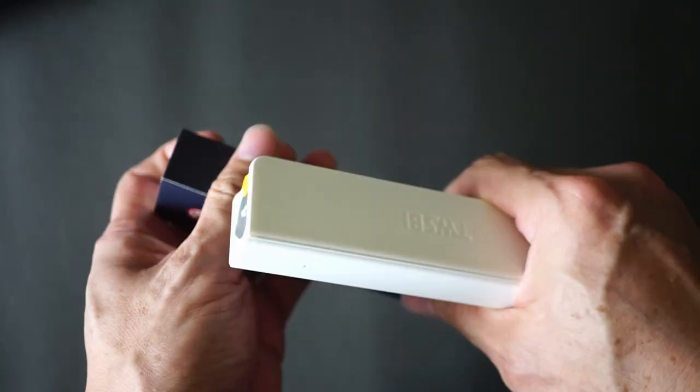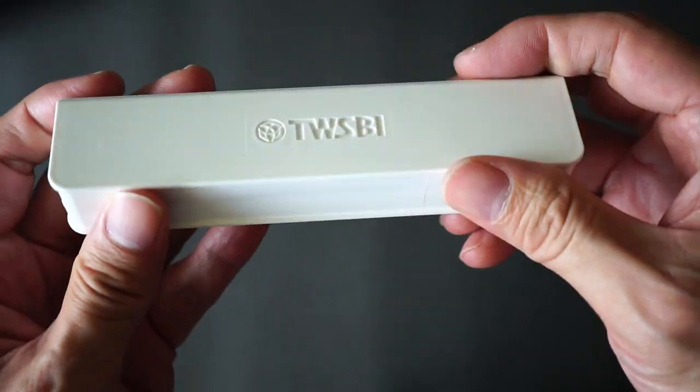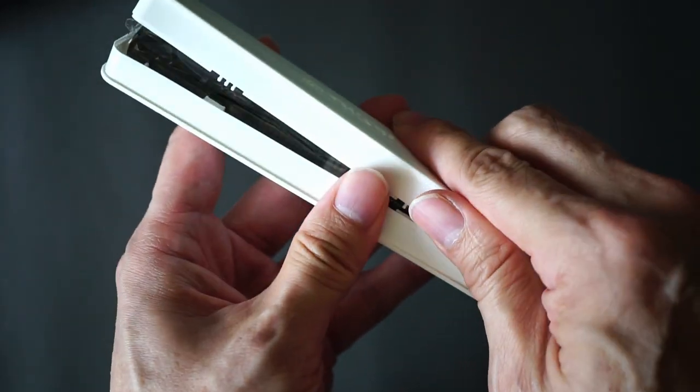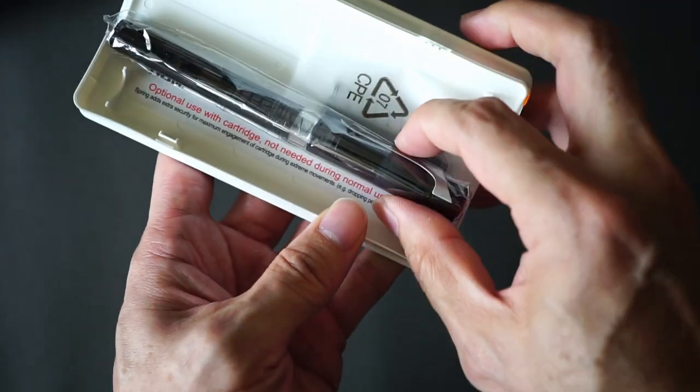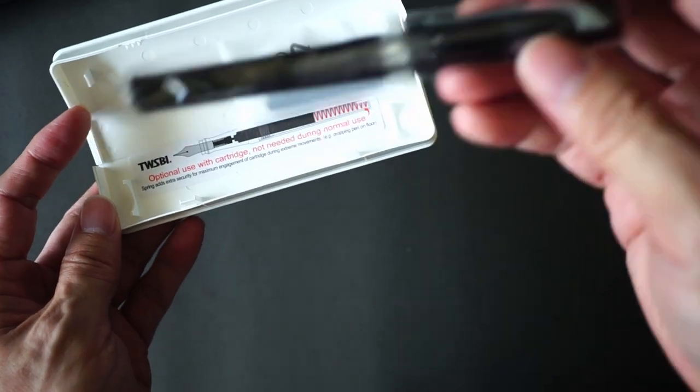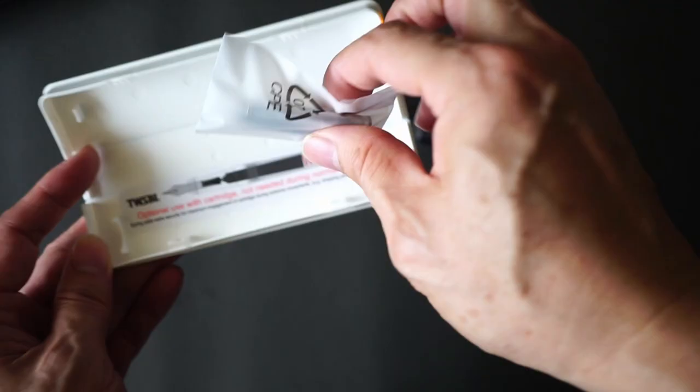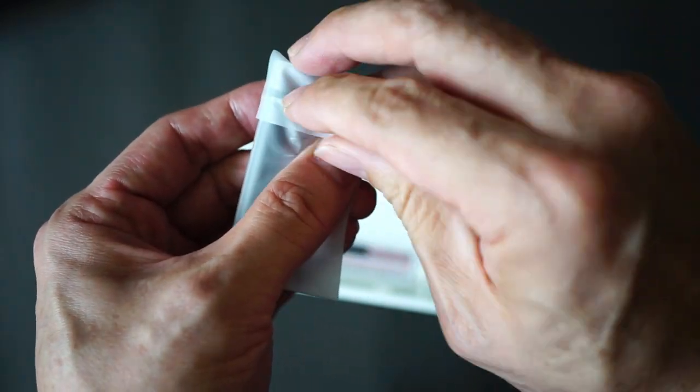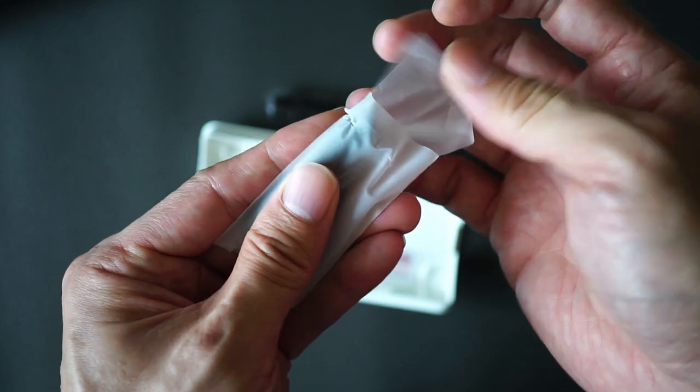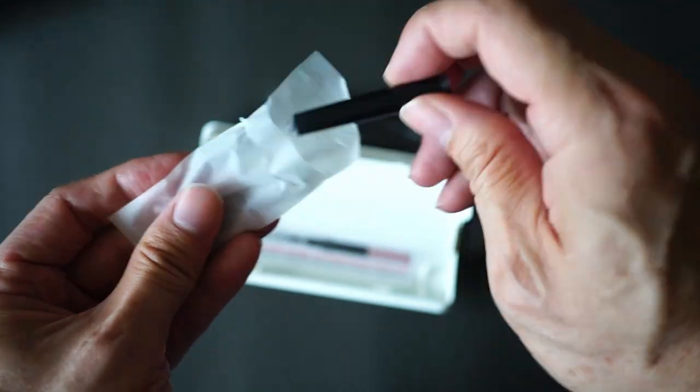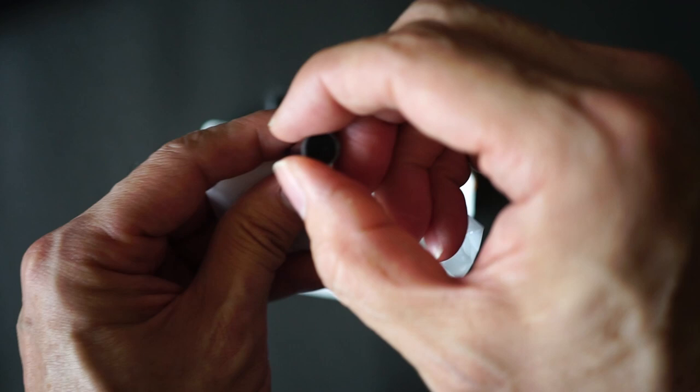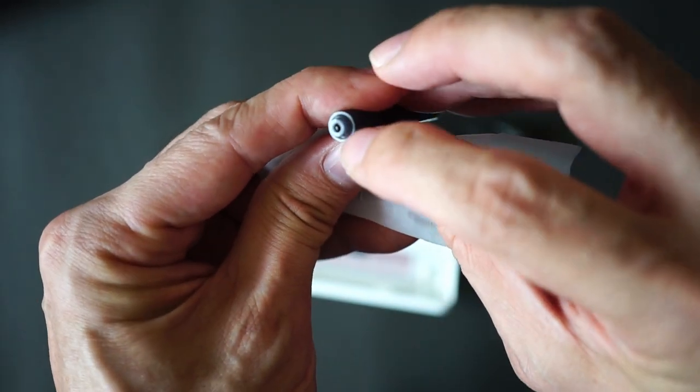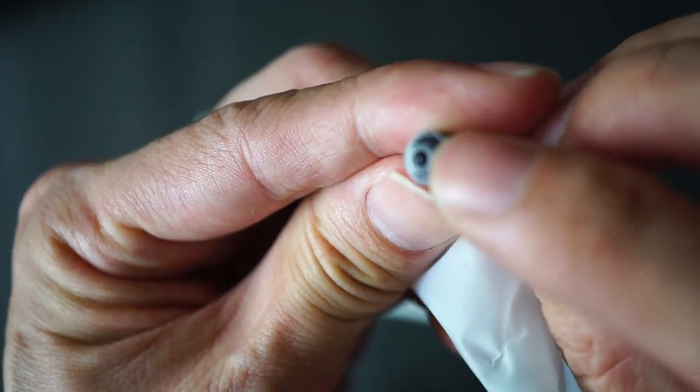Just opening up the cardboard sleeve, you get the little book-like box made of plastic. Inside you get the pen. We'll take a look at the pen later on, but what TWSBI provides with the pen is actually this plastic little sleeve down here that has a cartridge.